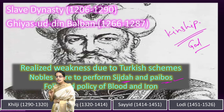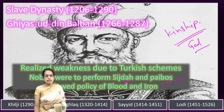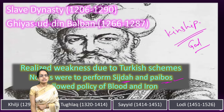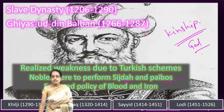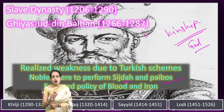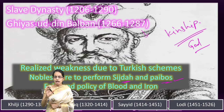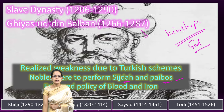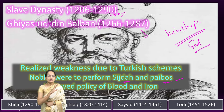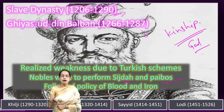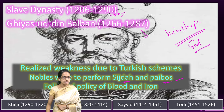He also built a chain of forts as a strategy to protect against Mongol invasions from the north. However, he died of an illness in 1286, and his successors were very weak. The Mamluk dynasty ultimately lost power after three to four years following his death.